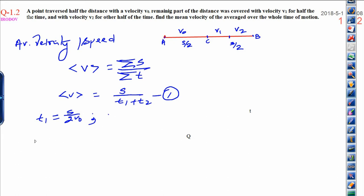In order to calculate t2, first you compare the distance. s by 2 is equal to v1 into t2 by 2 plus v2 into t2 by 2, because second half is divided in two parts. Finally, if you want to calculate t2 from it, it will be s upon v1 plus v2. This is the value of t2 and this is the value of t1.